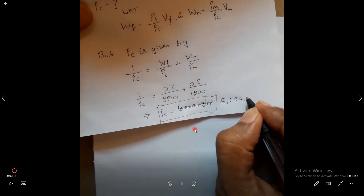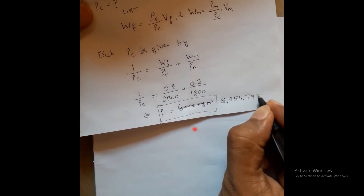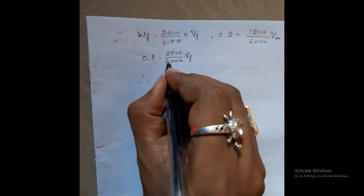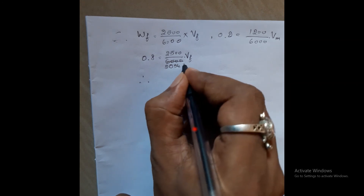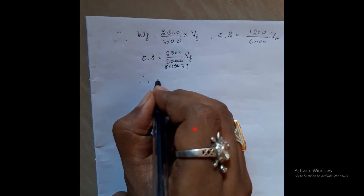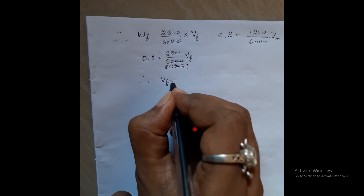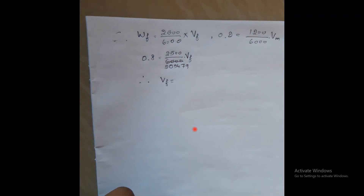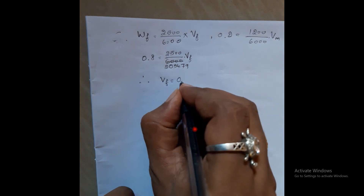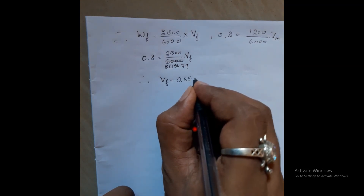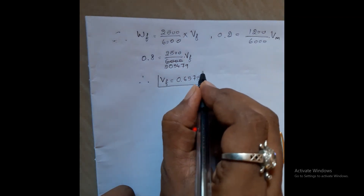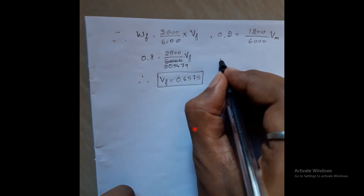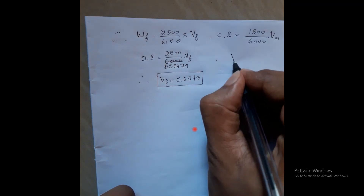Rho_C is equal to 2054.79 kg per meter cube. So I substitute that value here: 2500 divided by 2054.79, and I am getting volume fraction of fiber VF is equal to 0.6575. So that is the volume fraction of fiber. Either you can substitute that value here and calculate VM.